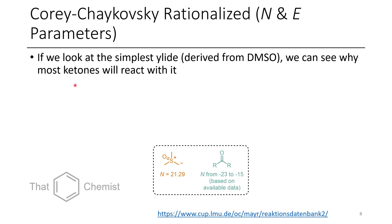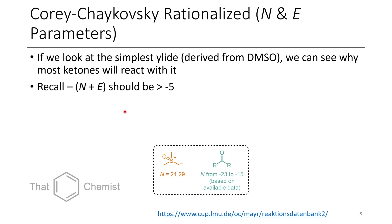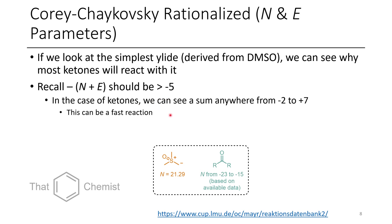Let's look at the simplest ylid. We can see why most ketones will react — this has an N of about 21, and most ketones have a range between minus 23 and minus 15, though there aren't many ketones in the dataset so take that with a grain of salt. If you recall from our earlier lecture on nucleophilicity, N plus E should sum to greater than minus 5 for any kinetically significant rate. Based on available data, we're usually in the range of minus 2 to plus 7 for this sulfonium ylid, so it will react with most ketones and aldehydes without any issue.